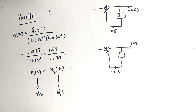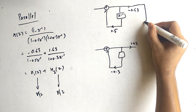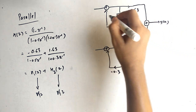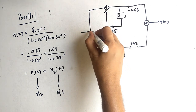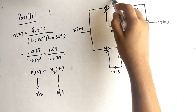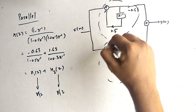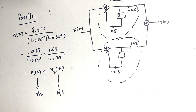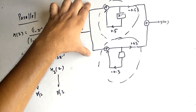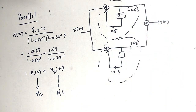What is unique in parallel realization is that we have to add the outputs of both H1 and H2, and this gives y of n. We give the common input x of n to both. This is the final answer — we have added H1 of Z plus H2 of Z to get the answer. On the left side, x of n is common for both, and on the output side we add them to get the common output y of n.